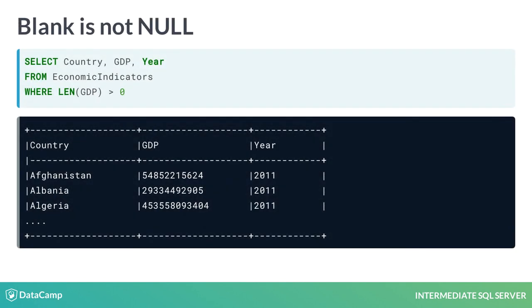As a blank value is a field with nothing in it, you can exclude blank values by returning rows where the length of the field is greater than 0. To do this, you can use a LEN function with the left parenthesis and the right parenthesis, as shown here, to only return columns which have a character length greater than 0 on the relevant column.